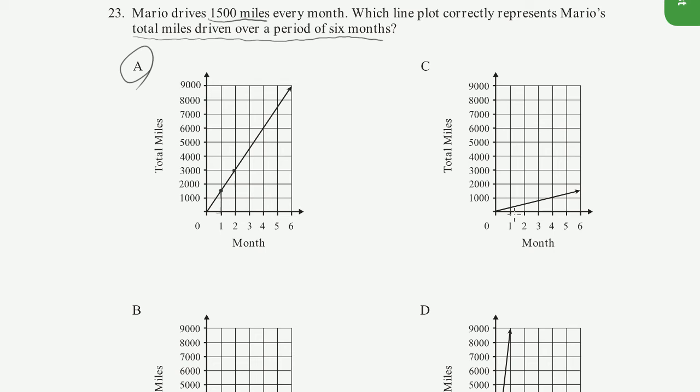and let's just verify that the other ones aren't describing this. So in choice C, it takes him six months to go 1,500 miles. That's not what they said. They said 1,500 miles every month. After one month, he only went like 250 miles or 500, he hardly didn't. So this is definitely not the case.